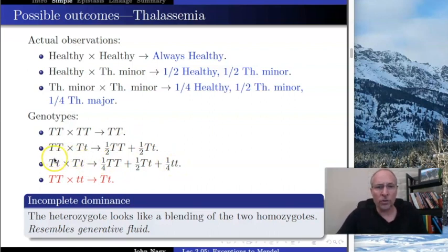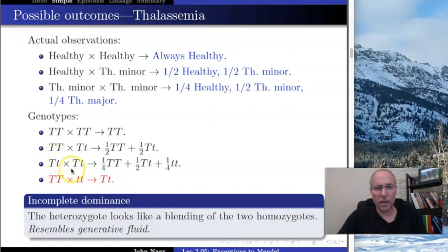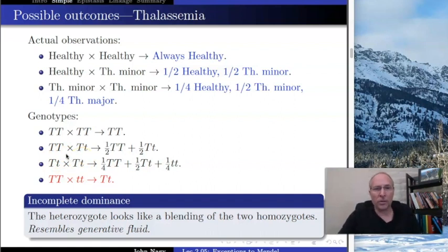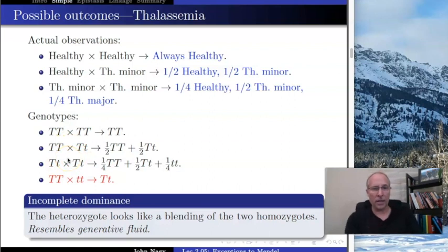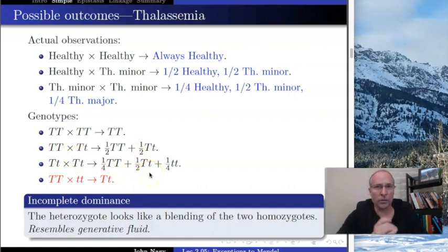To be precise: half the time one parent gives big T and the other gives little t — that's a quarter. The other possibility is the reverse: little t from one and big T from the other — another quarter. Adding those together gives one half for Tt — thalassemia minor. This uses the same thought process from the previous lecture. That explains why we see what we see in the data.